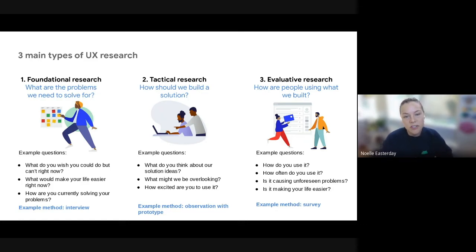So this is where observation and seeing you actually use a product would be very helpful for us to get information, to come back and maybe make some revisions or edit some of the solution ideas that we're working on. And the third type of research is evaluative research. We've established the problem. We've put out ideas and we've kind of tested the waters in the first and second stages. The third stage is how are people actually using what we built? This is after we've put out the product for people to use. And we ask questions like, how do you actually use this? How often do you use it? Is it causing unforeseen problems and is it making your life easier? Is it actually solving your day to day issue that we're trying to help you with?